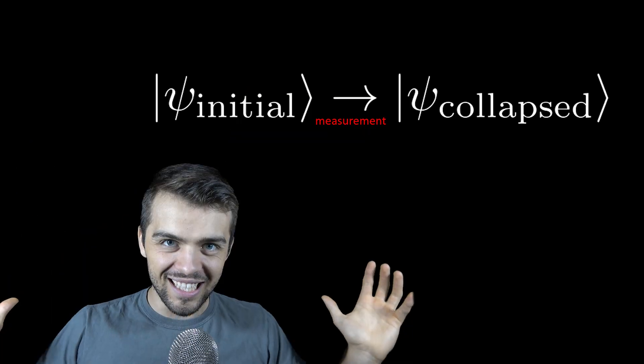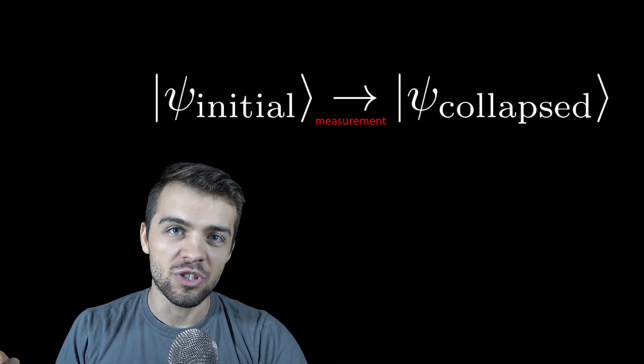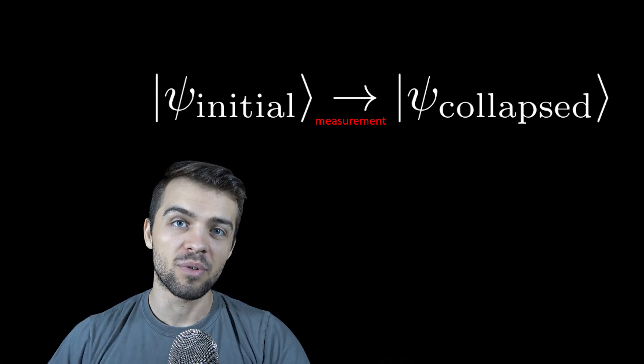It would be nice if the Schrödinger equation told us everything, but that's actually not the case. The Schrödinger equation does really well when a system is off on its own evolving in some environment, but as soon as the system is observed — meaning you measure a quantity like energy or spin or something else — the wave function of this particle, which encompasses everything you know about that state, collapses. And the collapse of the wave function is not governed by the Schrödinger equation.